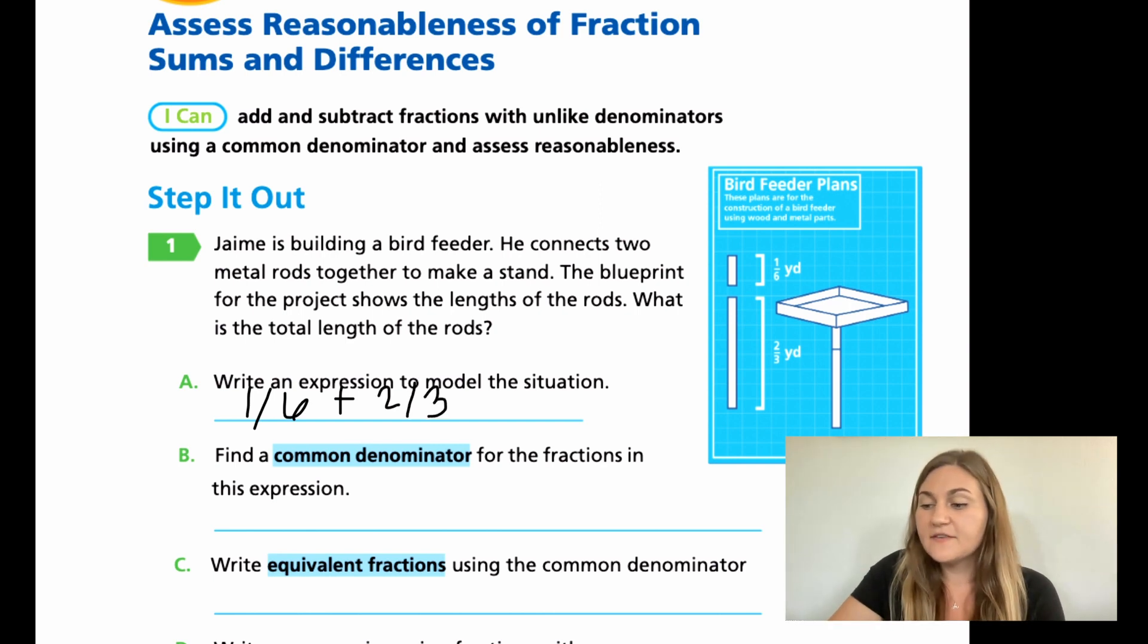All right, now we need to find a common denominator for the fractions in this expression. So between six and three, our common denominator is going to be six. Know that you don't have to change the six if the three can multiply by something to also be that six, which it can. So our common denominator in this problem is six.